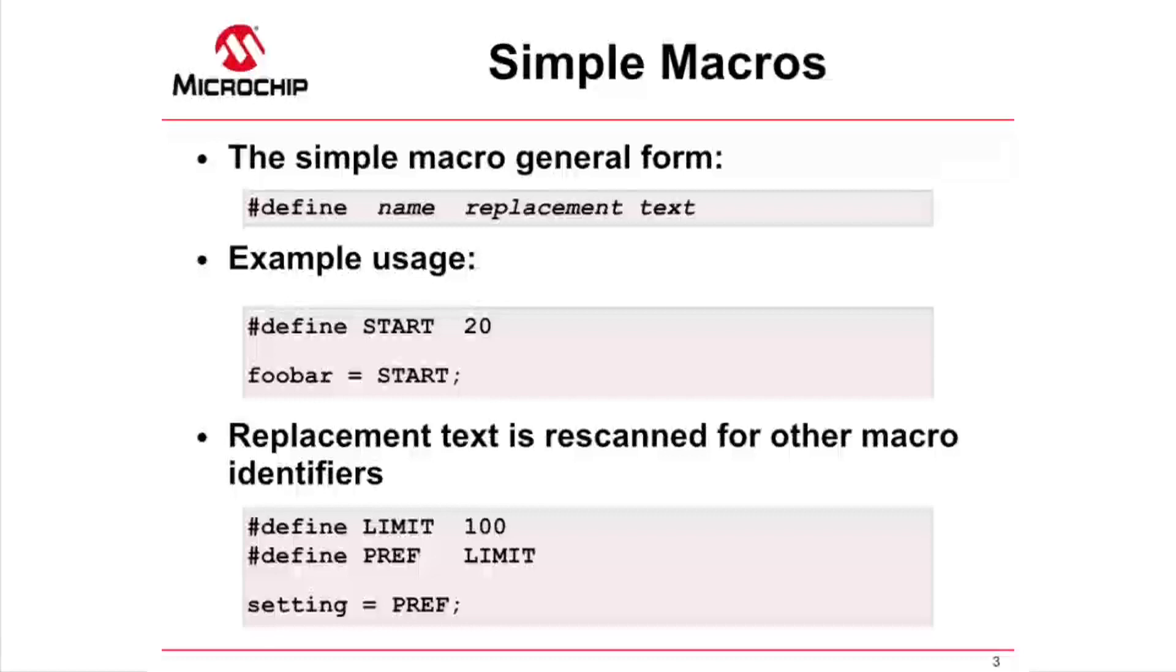One of the complications of macro expansion is that after substitution, the replacement text is re-scanned to see if it forms other preprocessor macro identifiers. This expansion process continues until no more macro identifiers are found. In the last example on this slide, the variable setting is assigned the value 100.